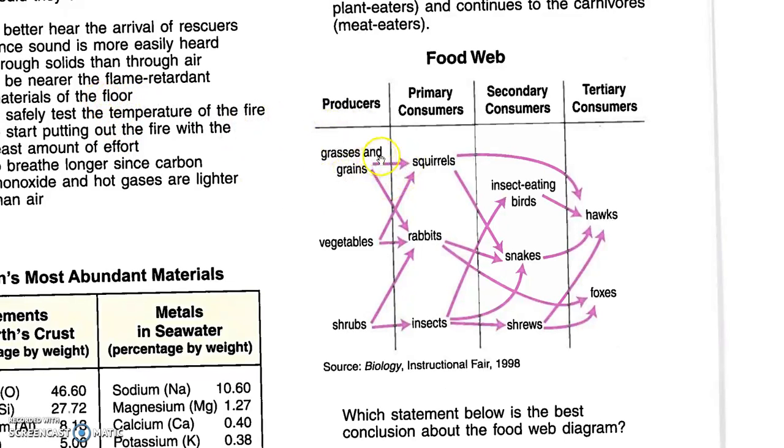This is then consumed by the primary consumers, the first level which feeds on the producers. We have the secondary consumers which feed on the primary consumers, and the tertiary consumers which feed on the secondary consumers, or possibly on a primary consumer.